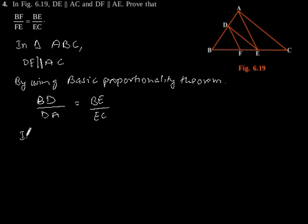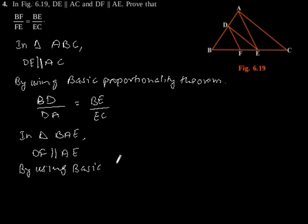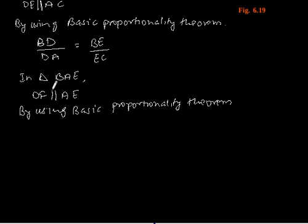Similarly, in triangle BAE, we have given DF is parallel to AE. So again, by using basic proportionality theorem, we will get BD by DA is equal to BF by FE.